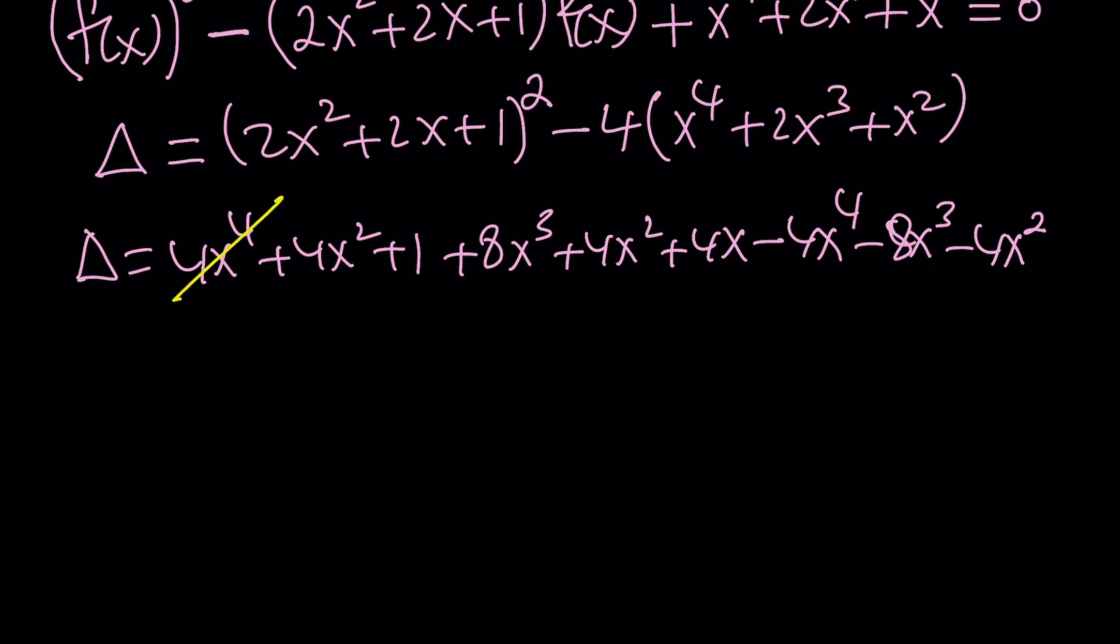4x to the 4th cancels out, 4x squared cancels out, 8x cubed cancels out. So we're only left with 4x squared plus 4x plus 1, which is super duper nice. Why? Because it is a perfect square, and that's perfect, awesome. So let's go ahead and write it as 4x squared plus 4x plus 1, which is equal to 2x plus 1 quantity squared.